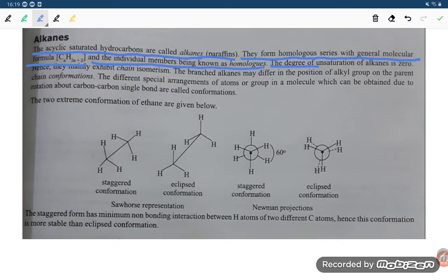The degree of unsaturation of alkane is zero. So there is no double or triple bondage there in the alkane. Hence, they are mainly exhibit the chain isomerism.